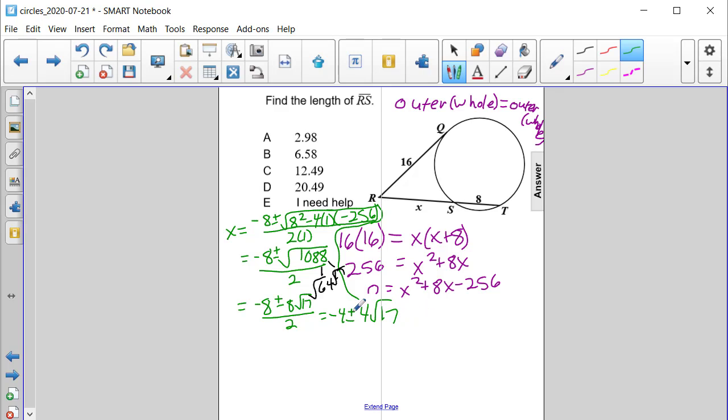And then if we think about it, negative 4 plus 4 square root of 17 will give us a positive number, and negative 4 minus 4 root 17 will give us a negative answer. And since this is a side length, we're only going to be finding the positive value. So it'll be negative 4 plus 4 square root of 17. And when we put that into a calculator, it ends up equaling approximately 12.49, or answer choice C.